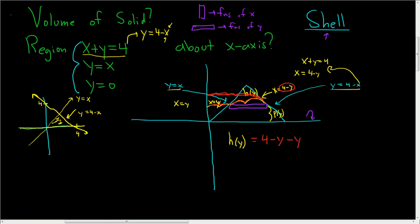Again, we're taking this distance here, which is 4 minus y, and we're subtracting this distance here, which is y. So we get 4 minus y minus y, which is 4 minus 2y.